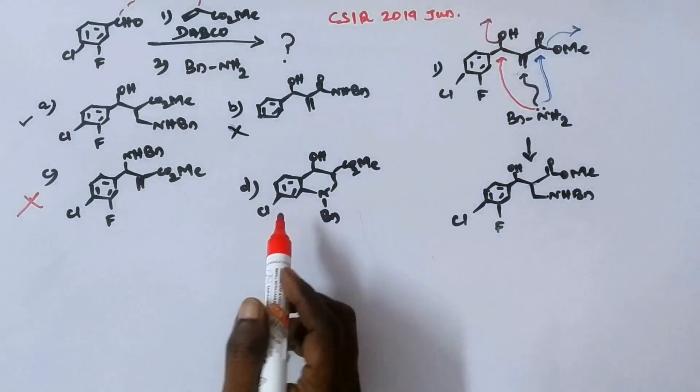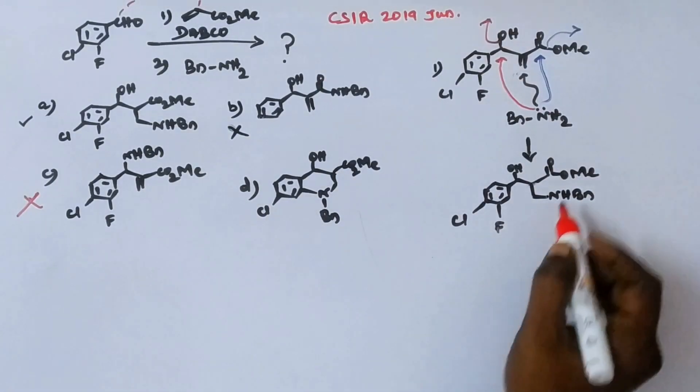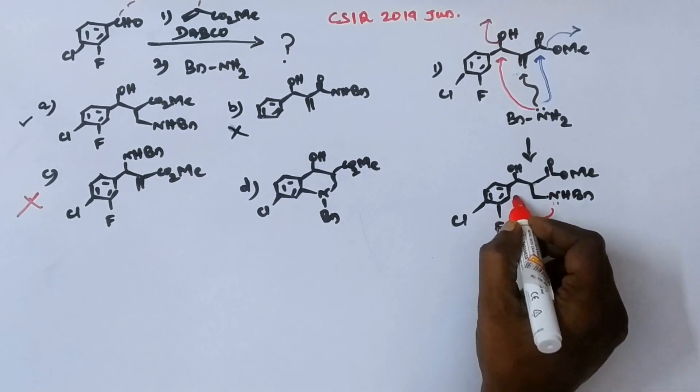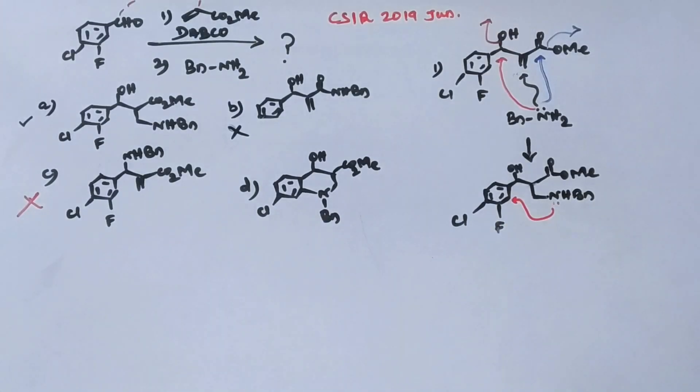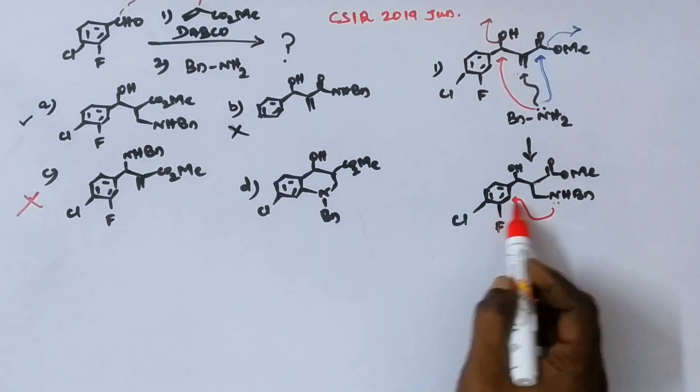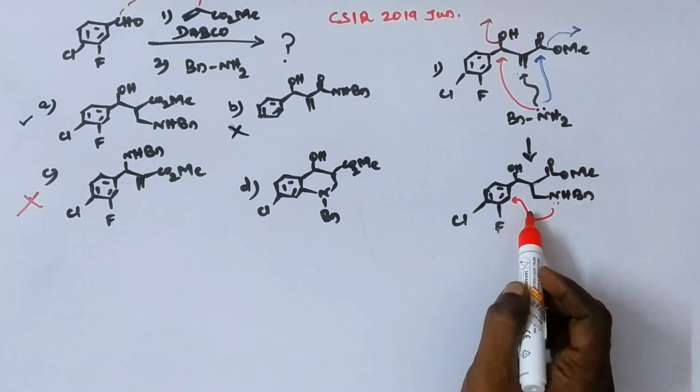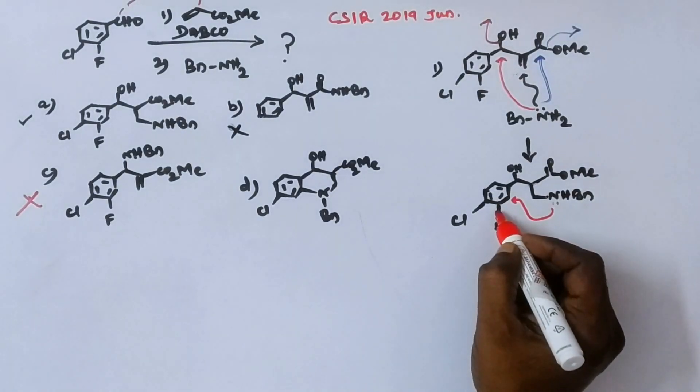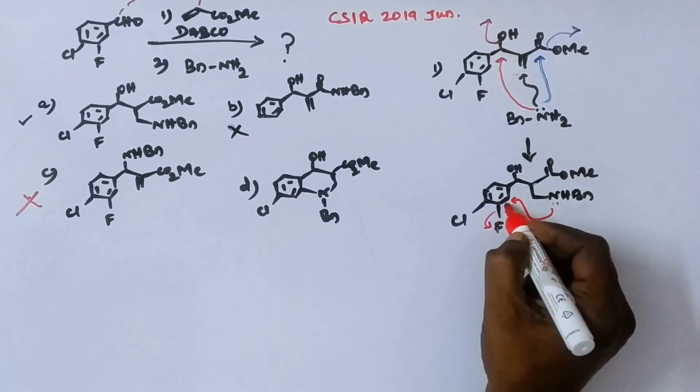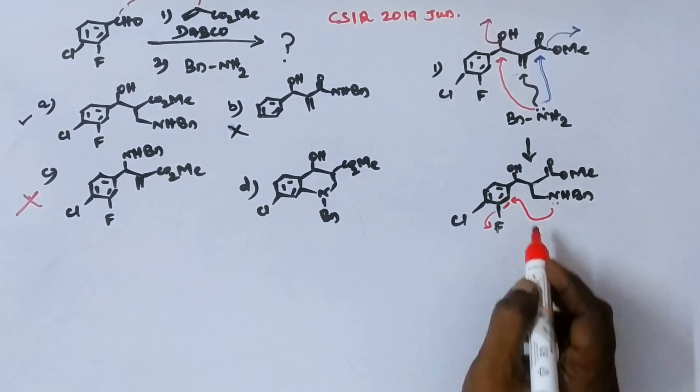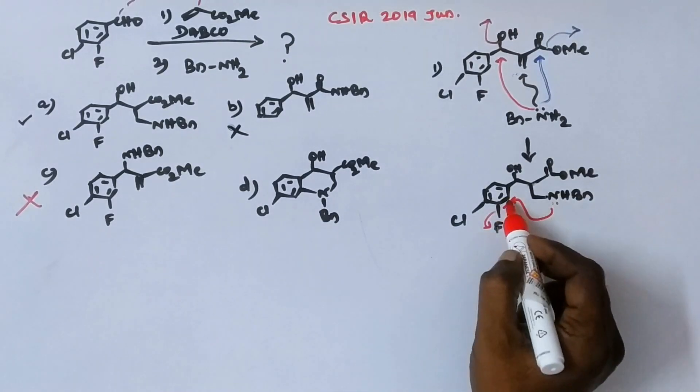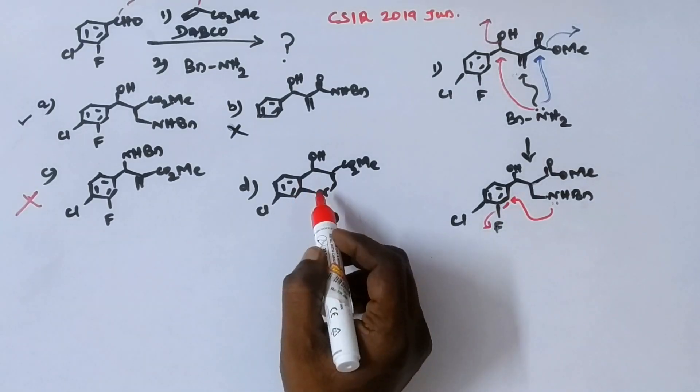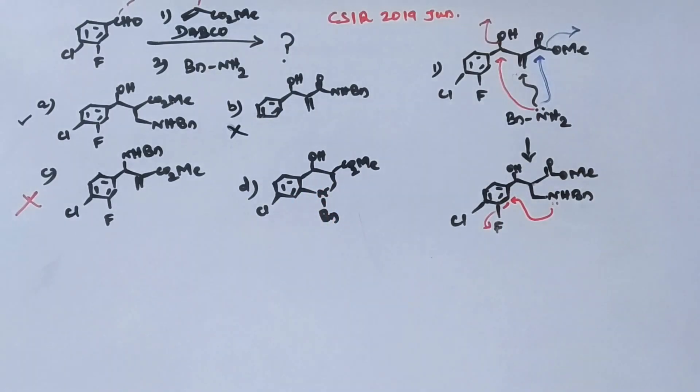Now let's see the option D. In case this nitrogen lone pair comes and attacks this carbon, intramolecular aromatic nucleophilic substitution. Then you get a cyclization. I mean a piperidine ring. Option D may be the product. But this is possible only when this fluorine goes out and forms a benzyne intermediate. And at this benzyne carbon, nitrogen substitutes, you will get this one.